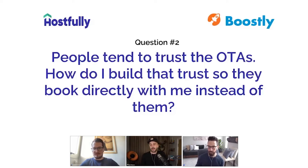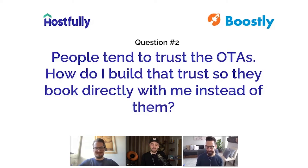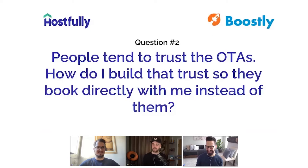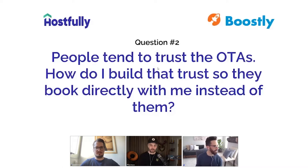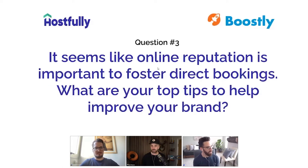Two simple ways to build trust: social proof and accreditation. Once you have these, shout about them loudly and proudly — don't meekly hide them on your website. This ties back to tip number one: if somebody who knows, likes, and trusts you recommends your property to a friend, all the other trust barriers are eradicated. Marrying relationships with social proof gives you a trust factor above and beyond. Also, Hostfully integrates directly with Revyoos — one of our newer integrations.